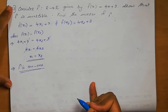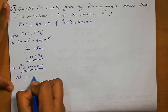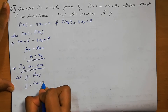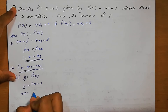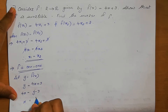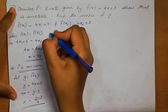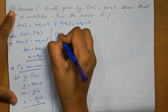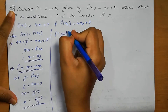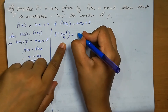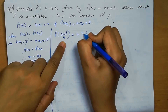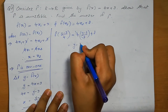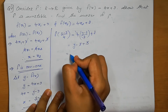Next we need to check for onto. Let y = f(x), that means y = 4x + 3. So 4x = y - 3, and x = (y-3)/4. Substituting back: f((y-3)/4) = 4·(y-3)/4 + 3. The 4s cancel: y - 3 + 3. So 3 - 3 = 0, and we get y.